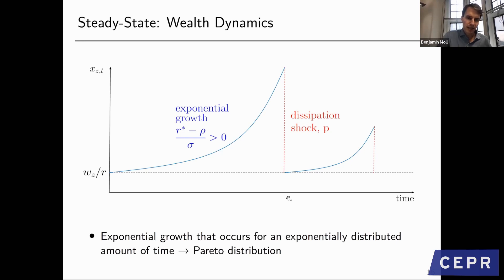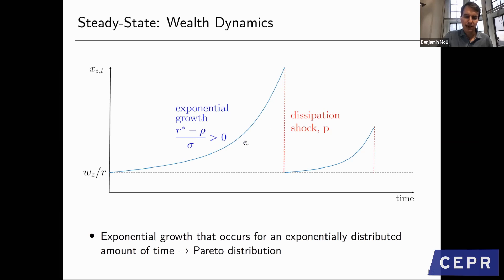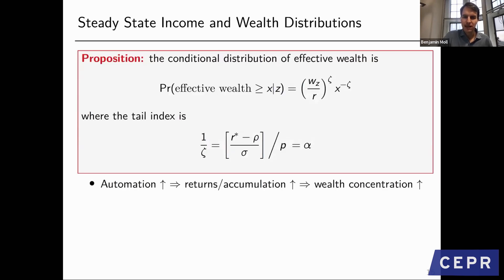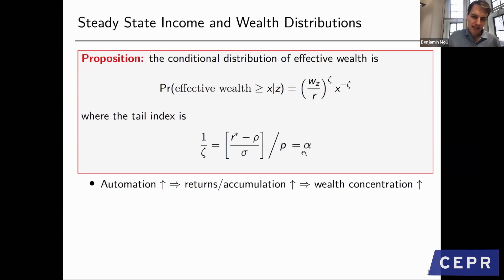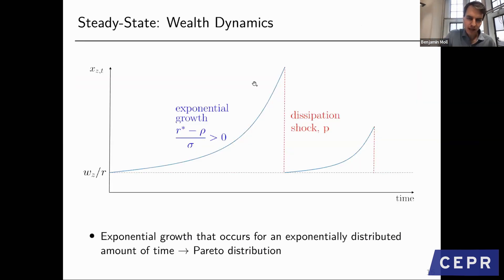On the wealth distribution: in this setup where people accumulate wealth according to the Euler gap—return to wealth minus discount rate—and are hit by dissipation shocks, it's well known that the stationary distribution is a Pareto distribution. Working it out, the wealth distribution has a Pareto tail index exactly equal to the capital share. When the capital share increases, the fatness of the Pareto distribution increases, through the mechanism of faster wealth accumulation by those already holding capital.